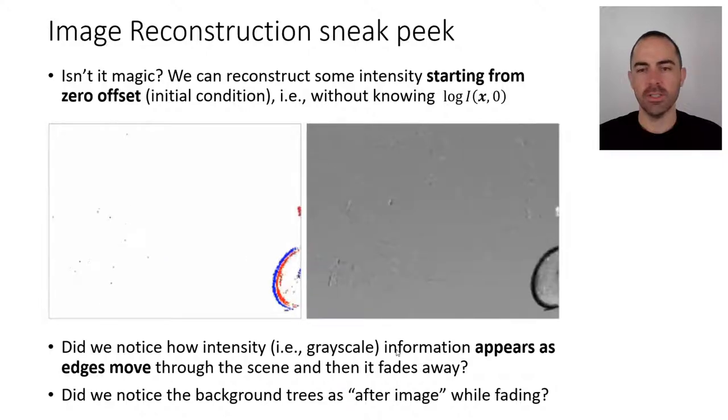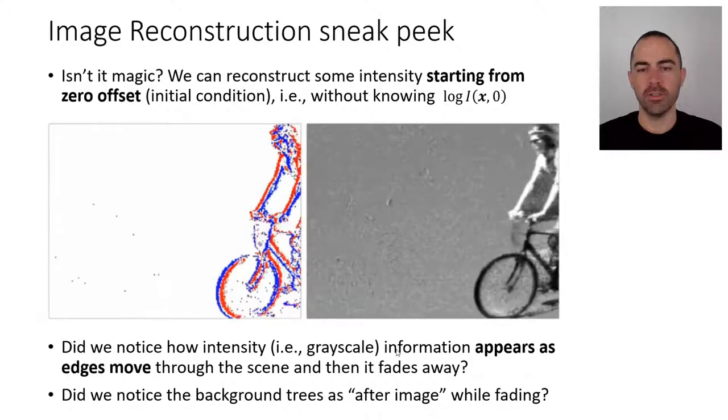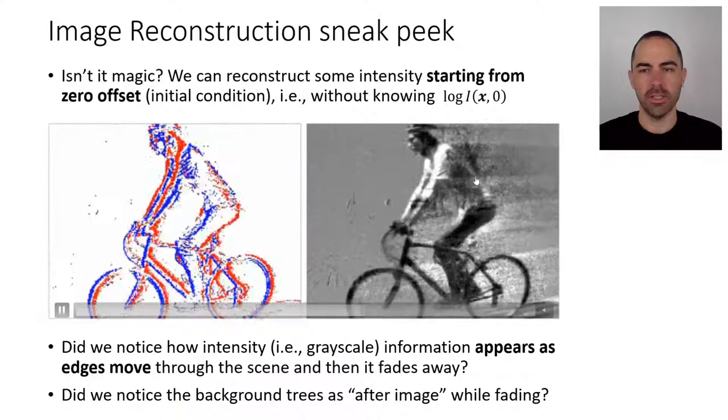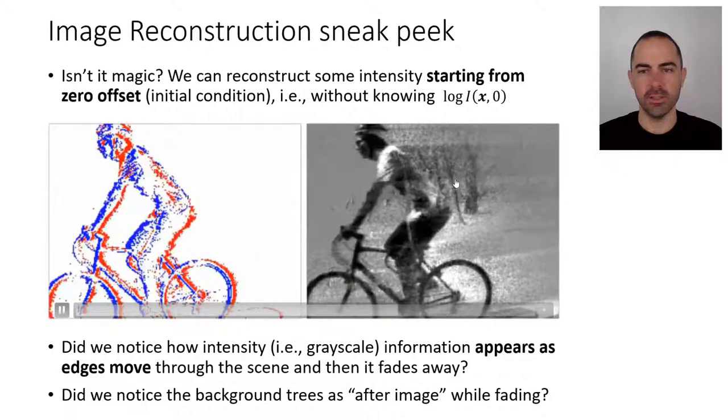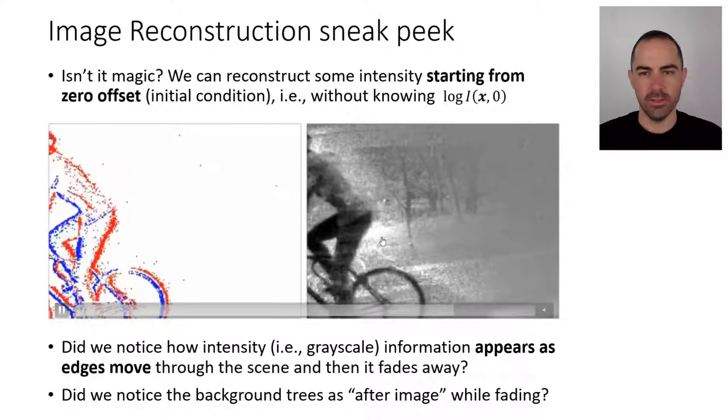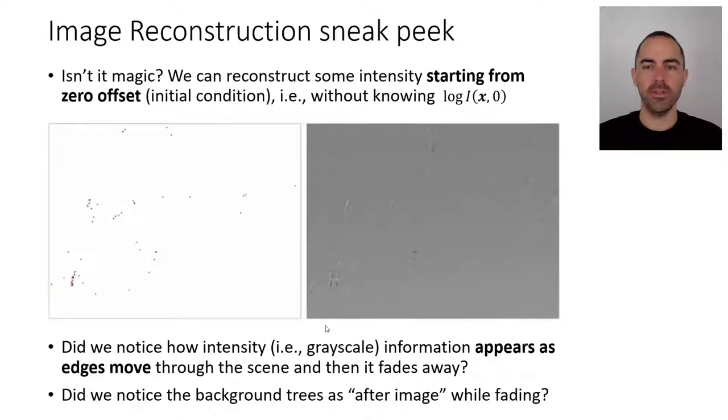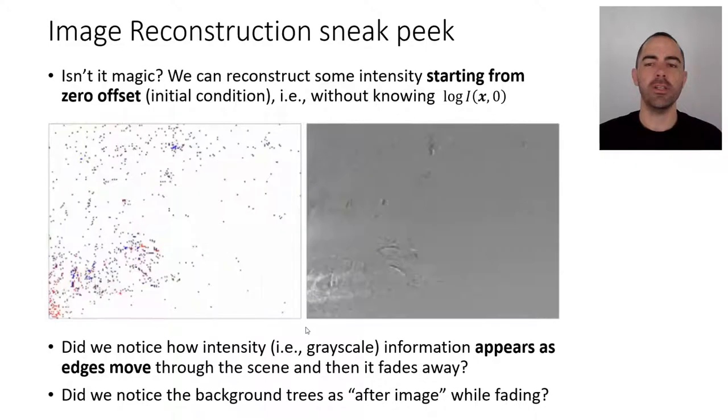And also did you notice that you can see what's in the background? There is like an after image when during fading. So after the cyclist I can see here behind, I can see some trees and a plant. So I think this is very interesting that the DVS gives us intensity changes.